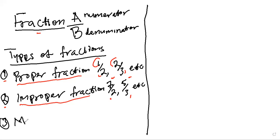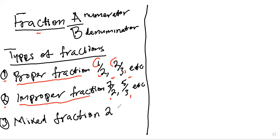Mixed fraction. For example, I have two and one over two — this is a mixed fraction. I could have one and two over two — this is a mixed fraction. So this is mixed fraction. When we are trying to resolve improper fraction, we arrive at what a mixed fraction is.